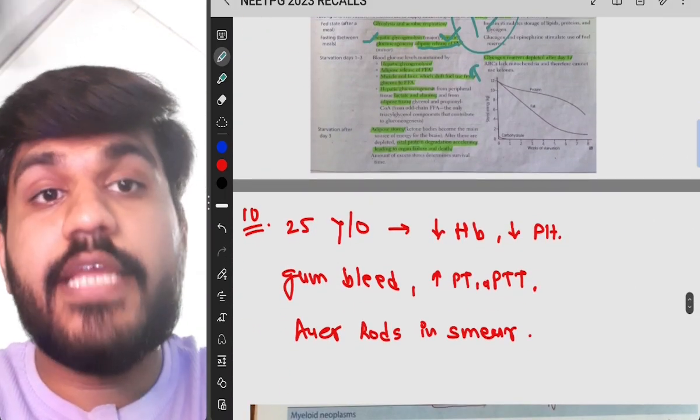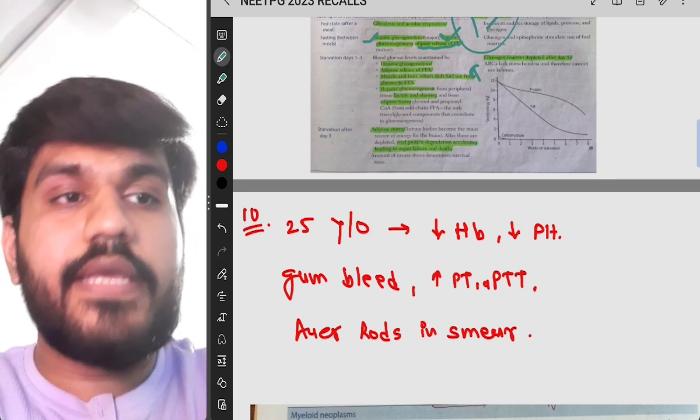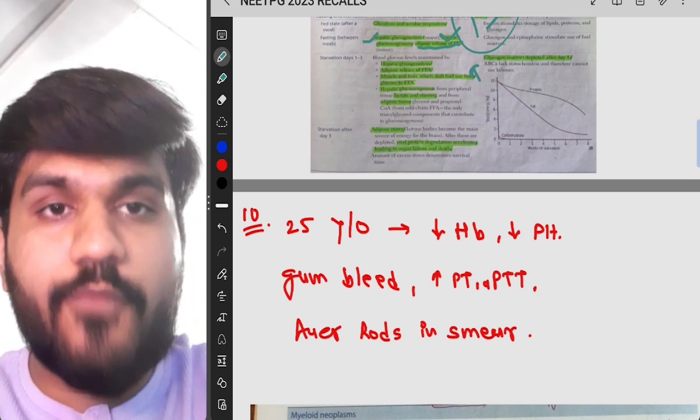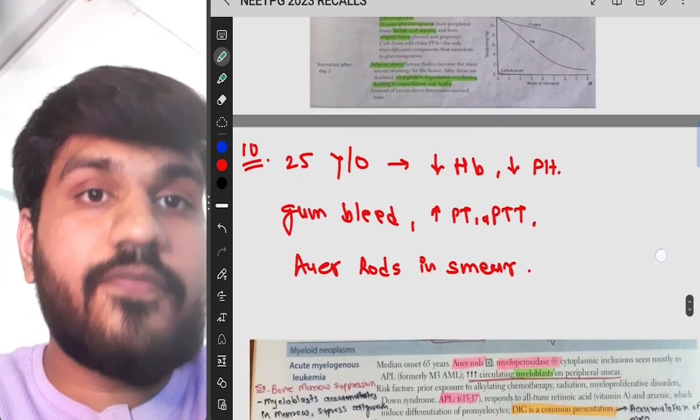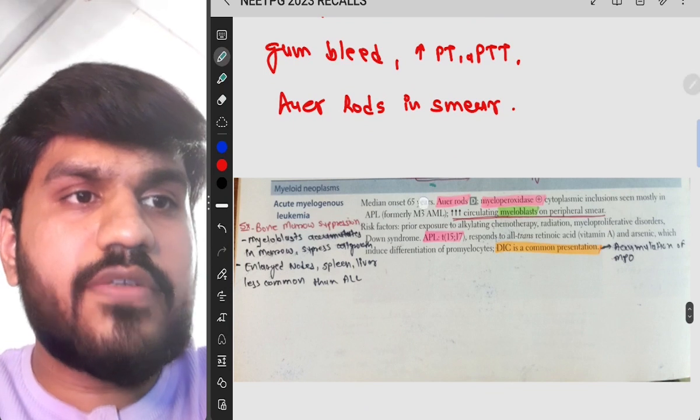Next we are going to move on to another question which is 25 year old, decrease in hemoglobin, decrease in platelet count, gum bleeding, increase in PT and APTT and Auer rod cell in smear. They have given the photo of Auer rod cell and you had to identify the Auer rod cell. So let's see in the First Aid what they have written.